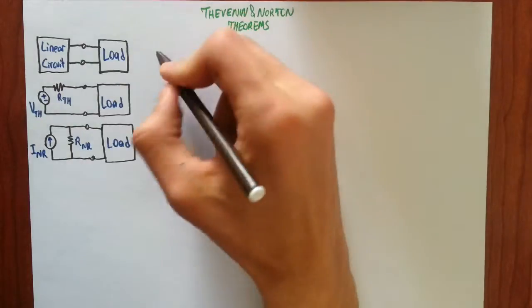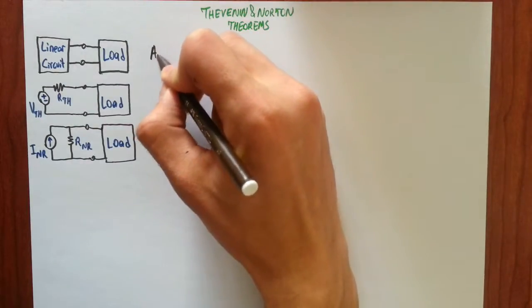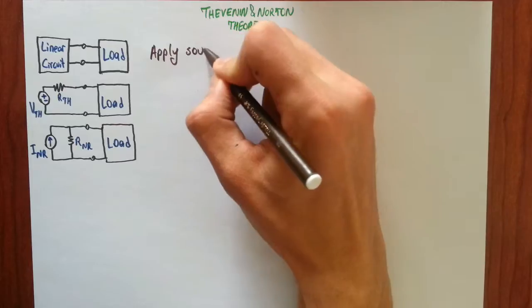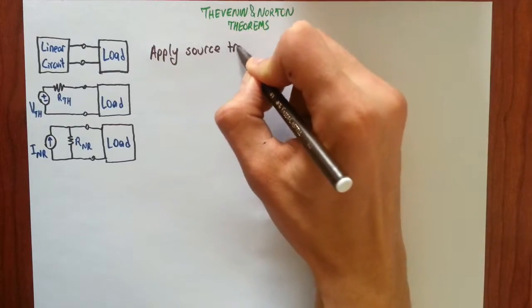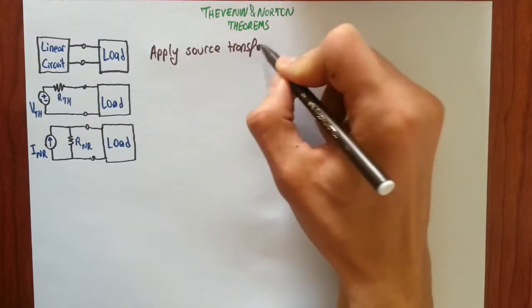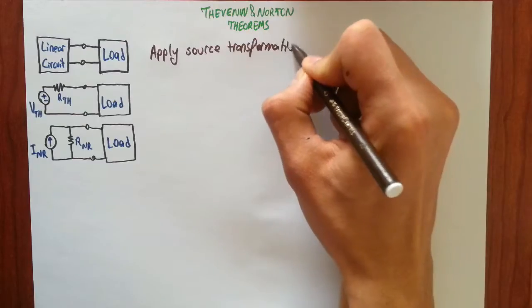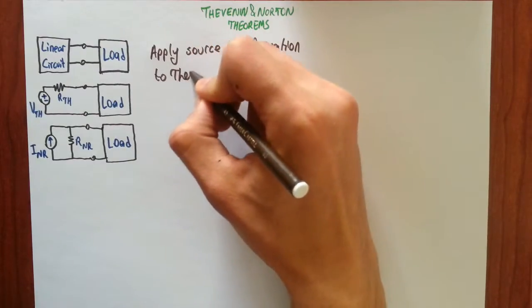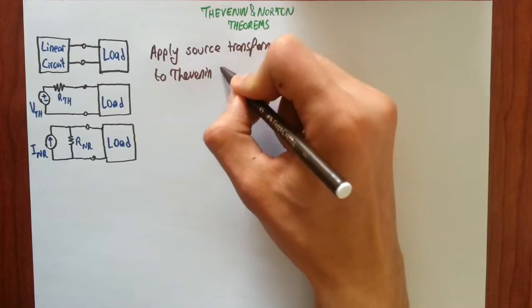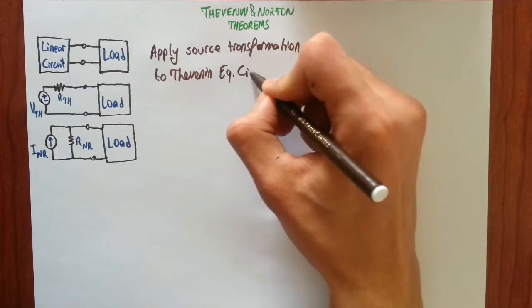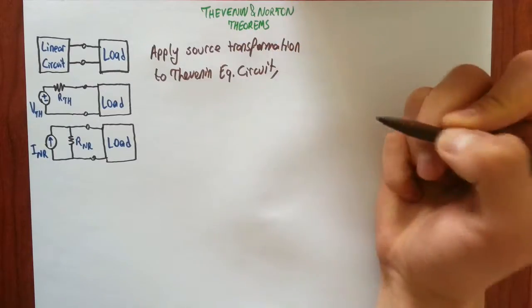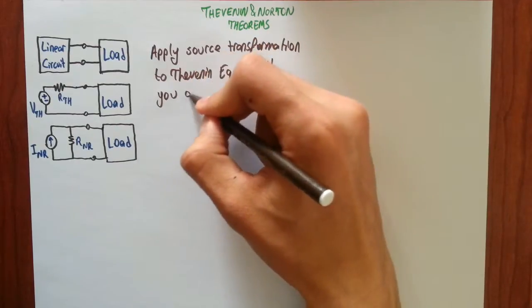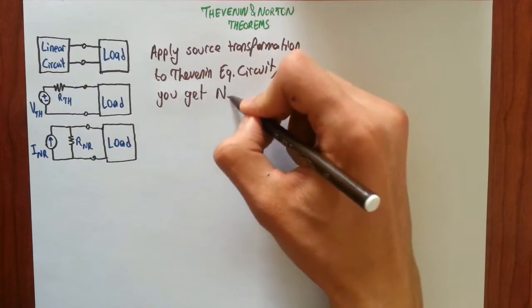Similarly, if you apply source transformation to the Norton equivalent circuit, what you get is the Thevenin equivalent circuit.